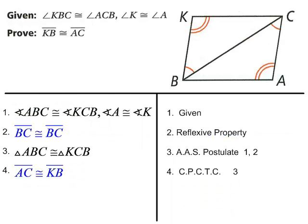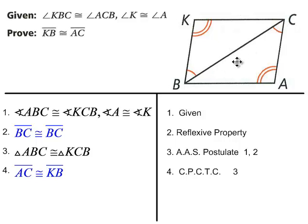Let's do another proof. If you're given that this angle is congruent to that angle, and angle A is congruent to angle K, then you can use the reflexive property to say that BC is congruent to itself. From there, we can say this triangle is congruent to that triangle by Angle-Angle-Side.